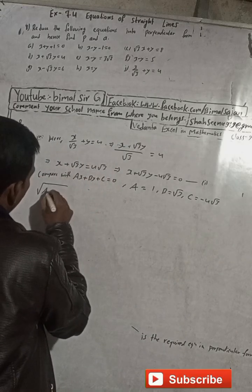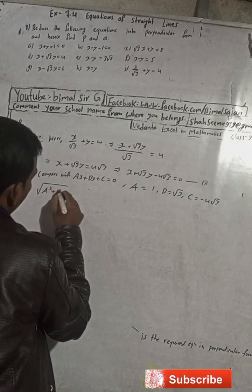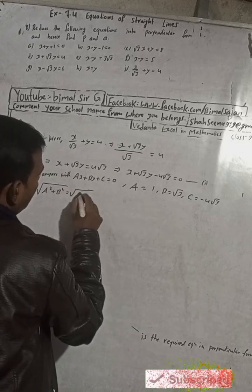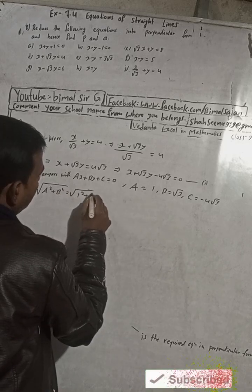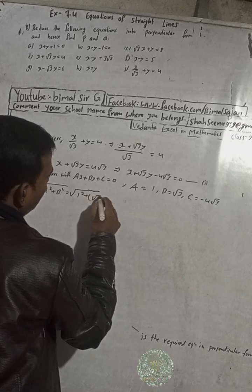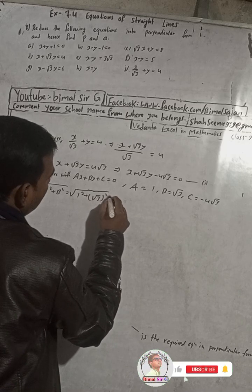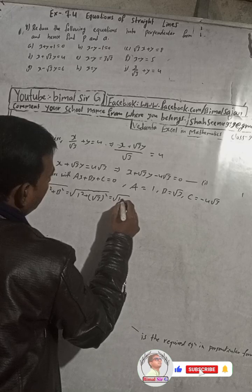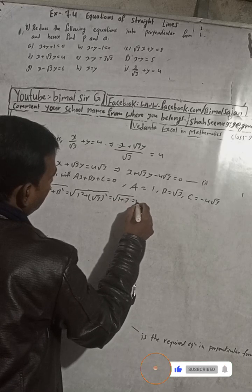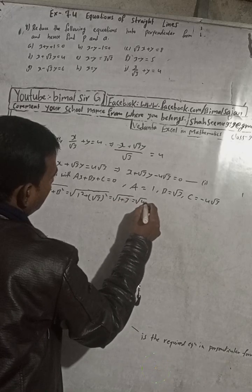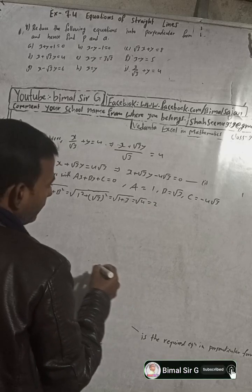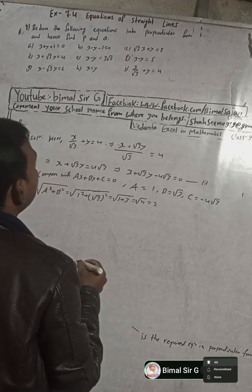Now we need to find √(a² + b²). That is √(1² + (√3)²) = √(1 + 3) = √4 = 2.